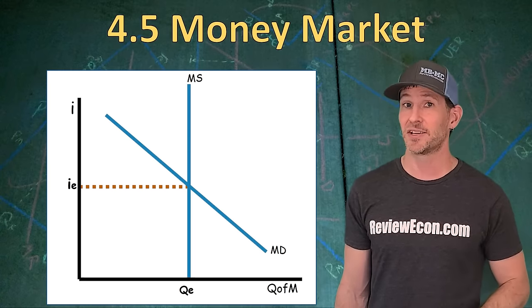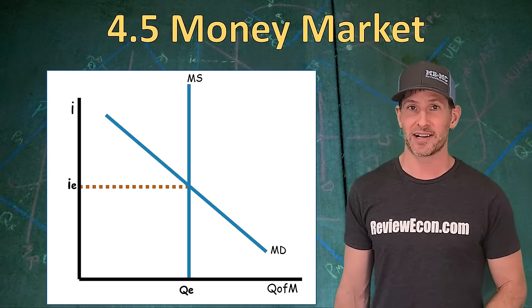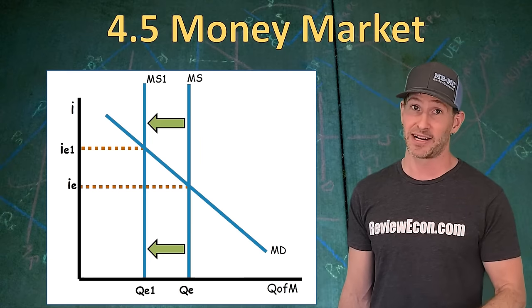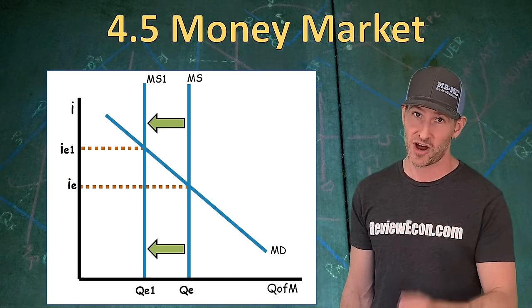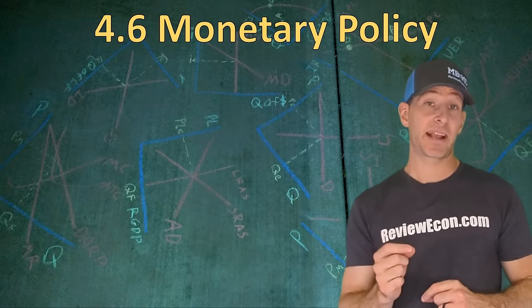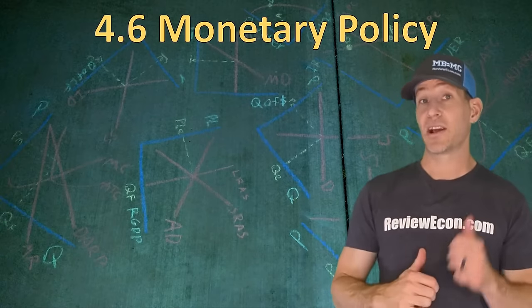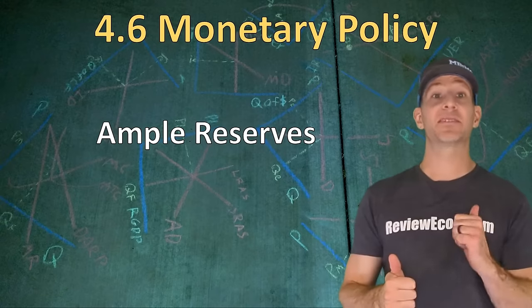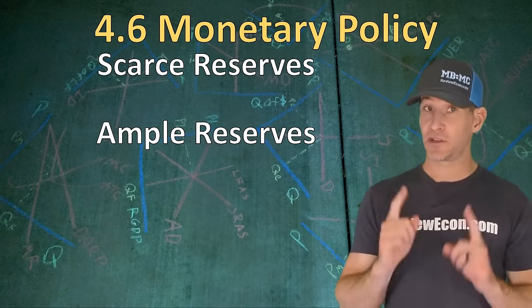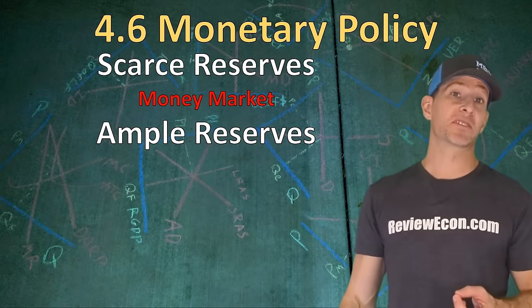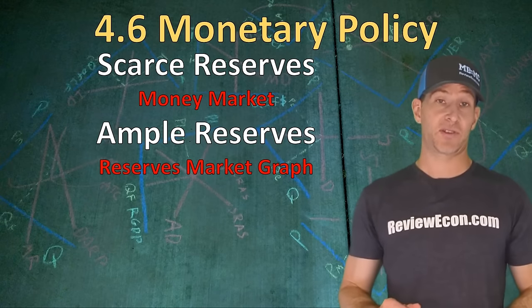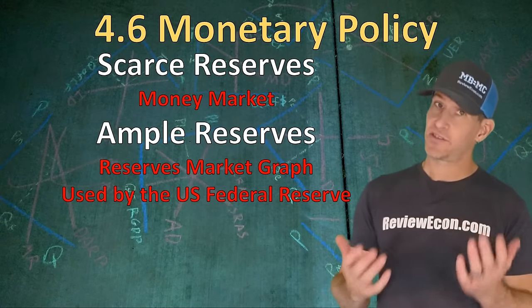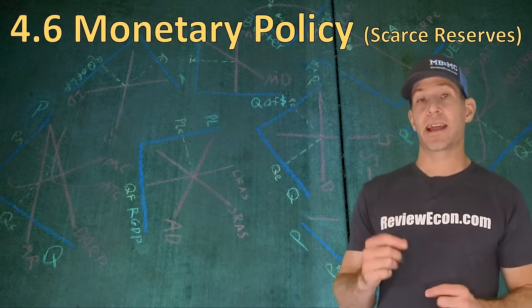When we graph the supply and demand curves together, we get our equilibrium nominal interest rate and equilibrium quantity of money. If either curve shifts, it will change the equilibrium price and quantity — the equilibrium price here being the nominal interest rate. When it comes to monetary policy, central banks can target interest rates using two systems: the ample reserve system and the scarce reserve system. The scarce reserve system uses the money market to target interest rates, while the ample reserve system uses the reserves market. In the United States, the Federal Reserve uses an ample reserve system and targets the federal funds rate in the reserves market.